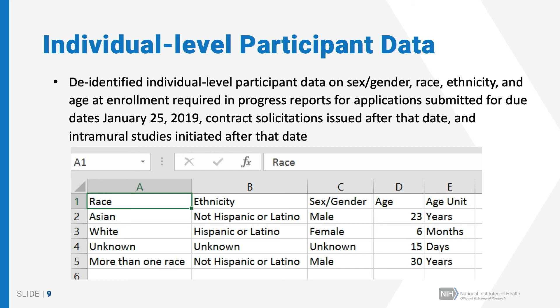What you submit will actually replace the Inclusion Enrollment Report. It looks like a spreadsheet — it's actually a CSV file — with separate columns for race, ethnicity, sex or gender, age, and age unit. Keep in mind that the age you're providing is the age at enrollment, and the age unit can be in units ranging from minutes to years.